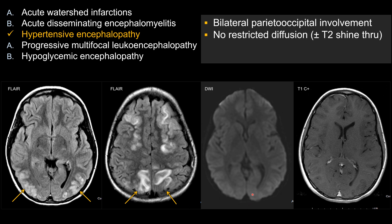On diffusion-weighted sequence, you see no restricted diffusion, or no signal at all. Often with hypertensive encephalopathy, you can see T2 shine-through, but classically you do not see associated restricted diffusion.